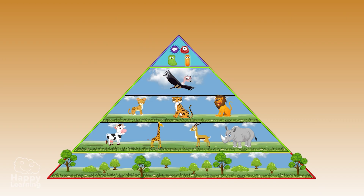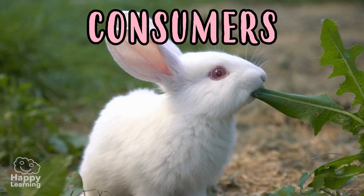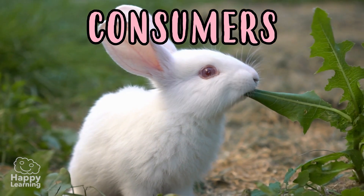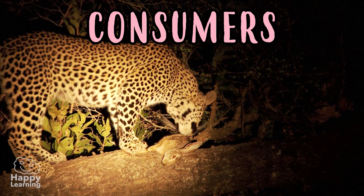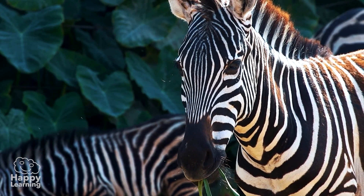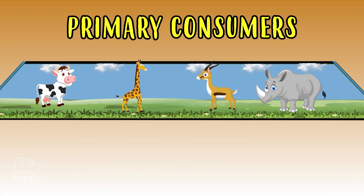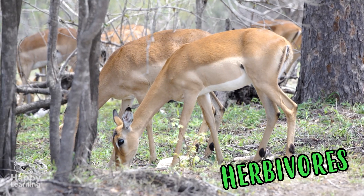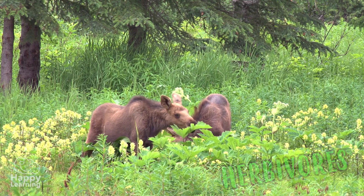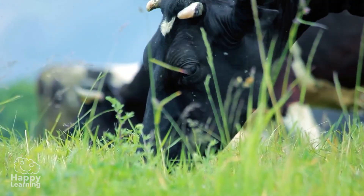On the pyramid's second level are the consumers. The consumers are all living things which feed on other living things. They are divided into three groups. The first is dedicated to the primary consumers. These are the herbivores, which are animals that eat directly from the producers, like these zebras or these cows.